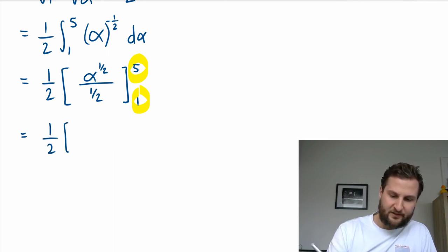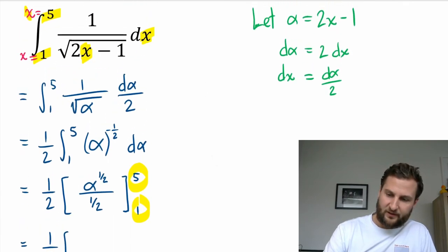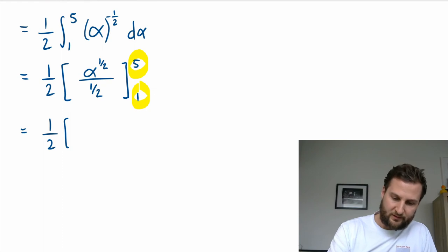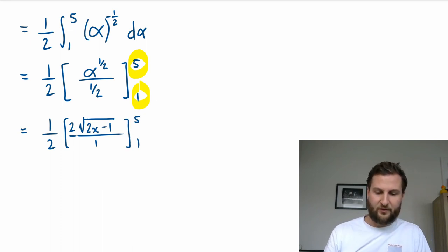So 1 half and instead of alpha I have 2x minus 1, and divided by 1 half is the same as multiply by 2, so maybe I'll just pop that up there over 1, 5 and 1.